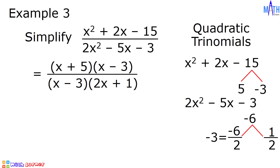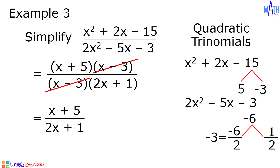After factoring, let us cancel the common factor. The common factor is x minus 3. Canceling x minus 3, we are left with x plus 5 over 2x plus 1. This is the simplified form of x squared plus 2x minus 15 all over 2x squared minus 5x minus 3.